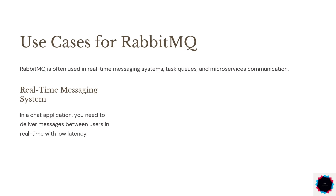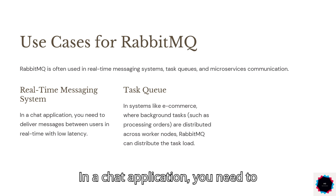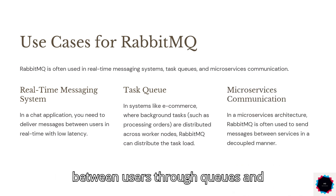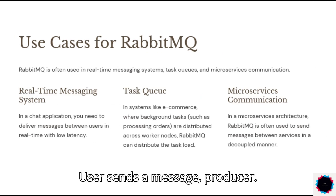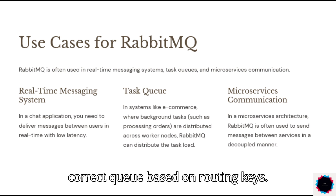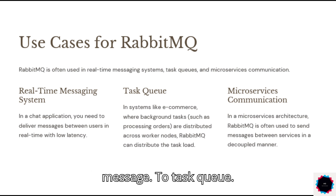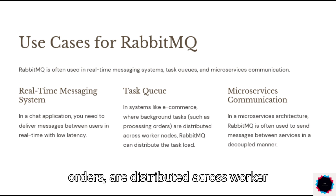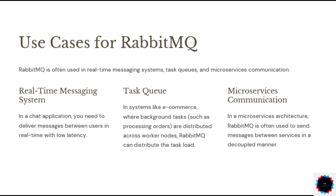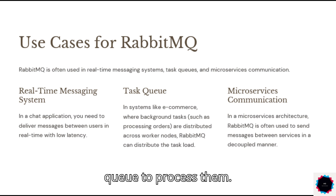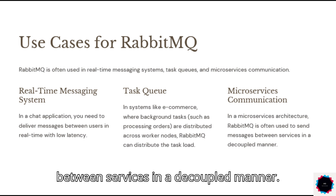Use Cases for RabbitMQ. 1. Real-Time Messaging System: In a chat application, you need to deliver messages between users in real-time with low latency. RabbitMQ routes messages between users through queues and exchanges – a user sends a message (producer), it goes to an exchange, which routes it to the correct queue based on routing keys, and the consumer receives it. 2. Task Queue: In e-commerce systems, RabbitMQ distributes background tasks such as processing orders across worker nodes – orders are placed into a task queue and workers pull tasks to process them. 3. Microservices Communication: In a microservices architecture, RabbitMQ is often used to send messages between services in a decoupled manner.